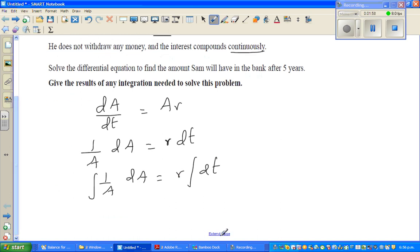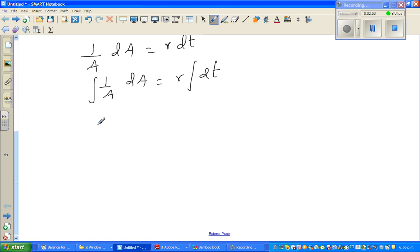Integrating both sides, I can say ln|A| = rt + c, where c is a constant of integration. Natural log has a base of e, so if you write this in power form, I can write |A| = e^(rt+c).